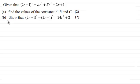We've got two parts here. Part (a): find the values of the constants A, B, and C. Part (b): show that (2r + 1)³ - (2r - 1)³ is equal to 24r² + 2.